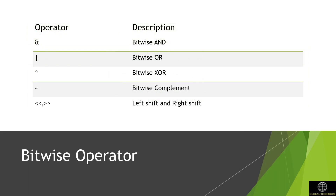Bitwise operators are a special set of operators provided by C. They are used in bit-level programming. These operators are used to manipulate bits of an integer expression. Logical, shift, and complement are the three types of bitwise operators.